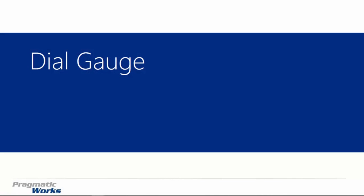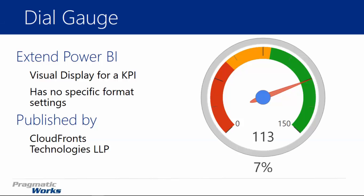Hi and welcome back to the Power BI Custom Visuals course. My name is Devin Knight and in this module we're going to be looking at the dial gauge. The dial gauge is a pretty simple visual but it's pretty good at showing you things that you would want to see from a KPI, so if you had KPI type data you would be able to visualize it inside of a gauge.